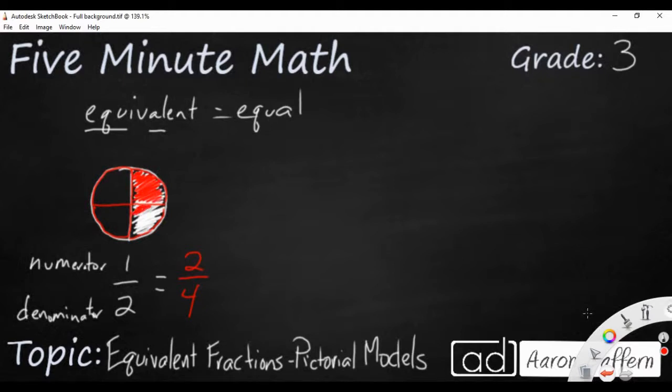So this is one way that we can make an equivalent fraction. We can take a fraction, and we can cut that fraction in half. Now you can't just cut the shaded part in half. You have to cut all the way across the entire fraction. But one-half is the exact same shaded amount as two-fourths.